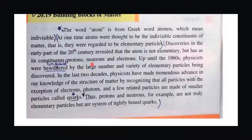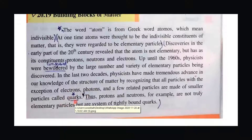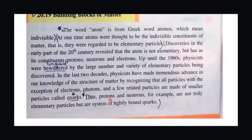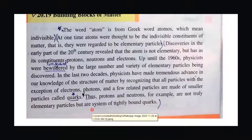Quarks are the basic building blocks — they are the true elementary particles. The electron is also an elementary particle; it is not further divided into any other particle. But protons and neutrons are not truly elementary particles — they are further divided. So let's look at the classification of fundamental particles.